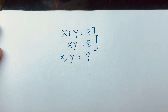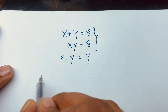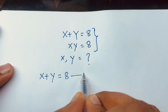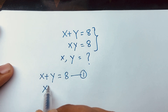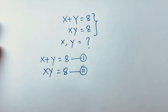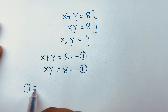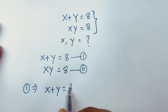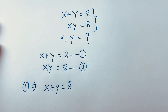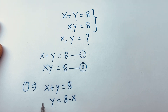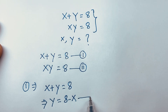So how to solve this question? Our first equation is x plus y is equal to 8, and our second equation is x y is equal to 8. From the first equation, y is equal to 8 minus x. We move this x to the other side, so we get minus x — this is our third equation.